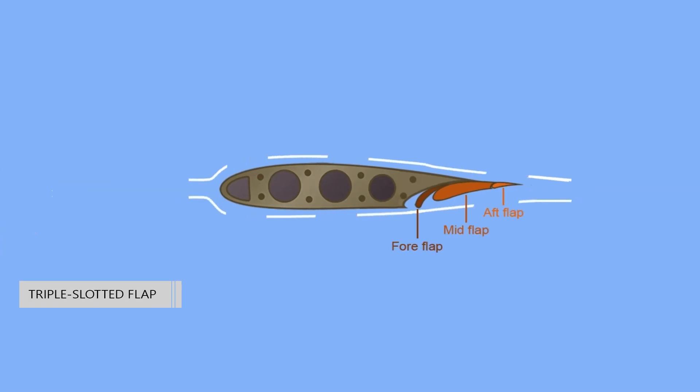An enhanced version of the Fowler flap is a set of flaps that actually contains more than one aerodynamic surface. In this configuration, the flap consists of a fore flap, a mid flap, and an aft flap. When deployed, each flap section slides aft on tracks as it lowers. The flap sections also separate leaving an open slot between the wing and the fore flap, as well as between each of the flap sections.